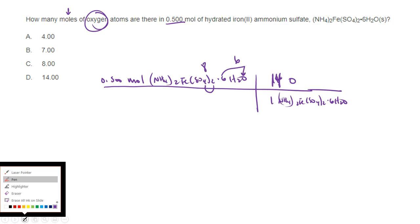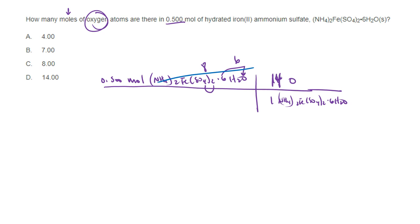14 oxygen atoms in every one unit of ammonium iron sulfate hexahydrate. So I can cancel out ammonium iron ammonium sulfate hexahydrate. And all I have to do is multiply my 0.5 by 14. Half of 14 is 7. So about 7 moles. If it had asked for atoms instead of moles, then I would take that 7 and I would multiply it by 6.02 times 10 to the 23rd. If it did not ask for atoms, I don't need to do that. I'm just going to stop here at moles.